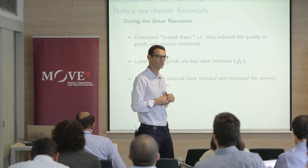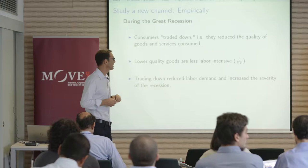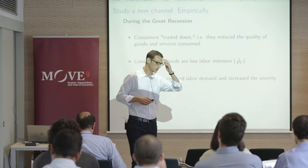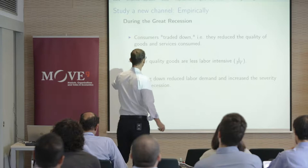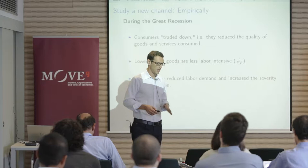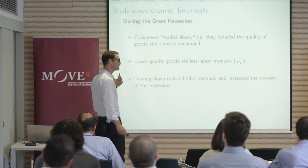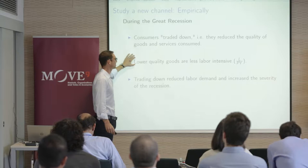The other thing I will show you is that production in the US of lower quality goods — the lower the quality of the goods — the less labor per dollar of sales it uses. That's the concept of labor intensity. That's pretty surprising evidence, very robust. So lower quality goods require less labor per dollar of sales. Together, in the accounting sense, trading down — the fact that consumers went to lower quality goods — reduced labor demand and increased the severity of the recession.